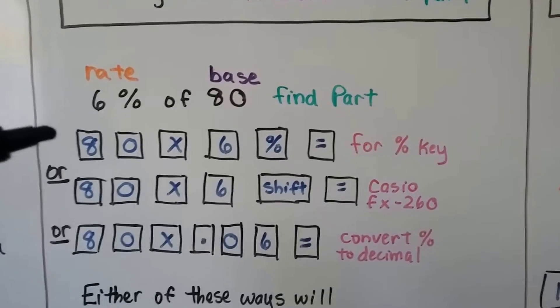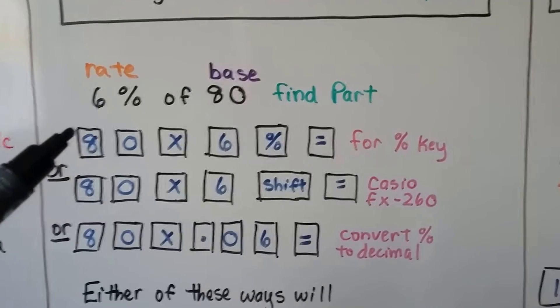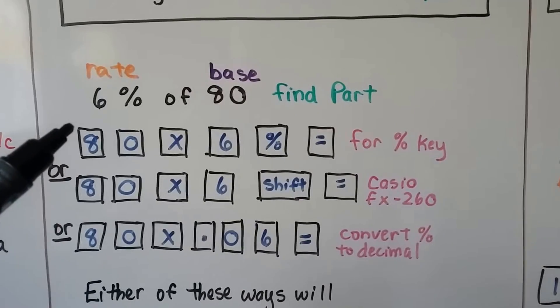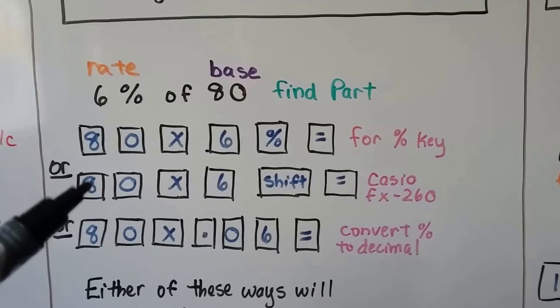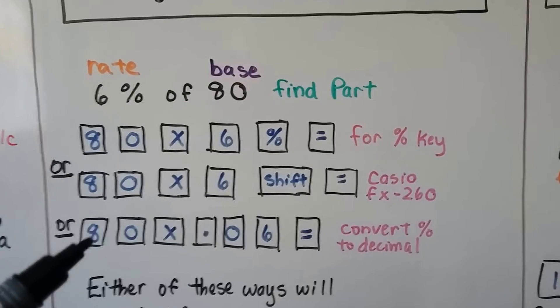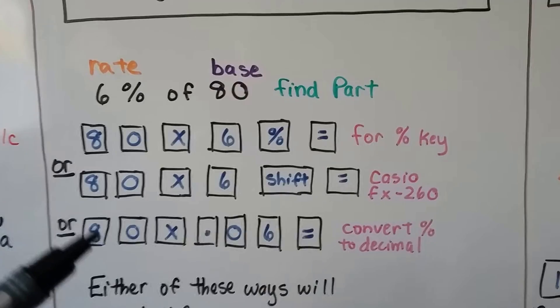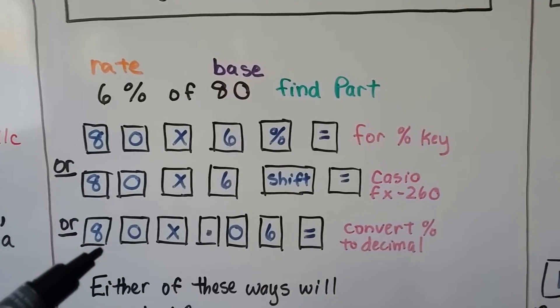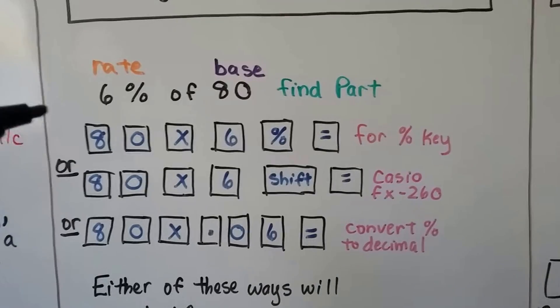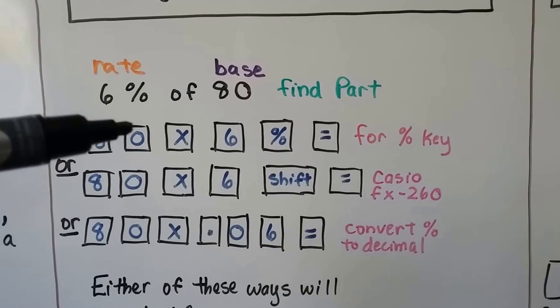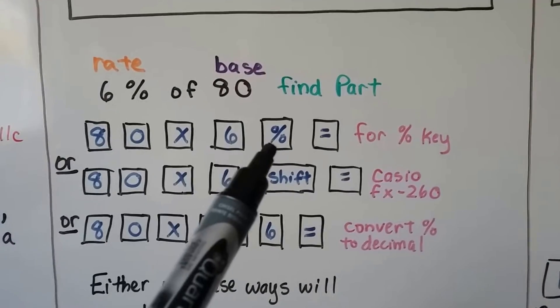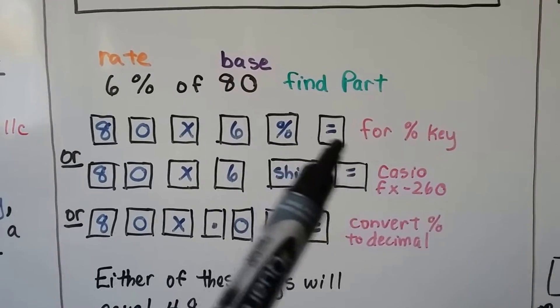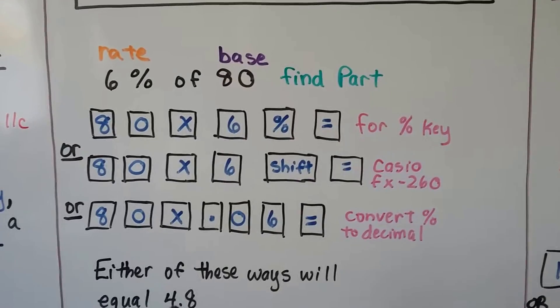We have three different choices. The first one is if there is a percent key on our calculator. This one is for the calculator that they usually lend you for the GED test. And this one is for any calculator if we convert it to a decimal first. We would put in the 8 and then the 0, then the multiplication key. Then we would hit 6 and then just hit the percent key.